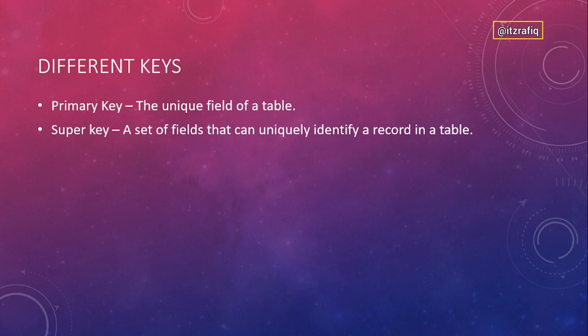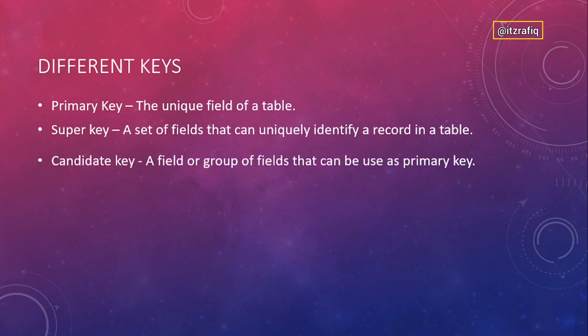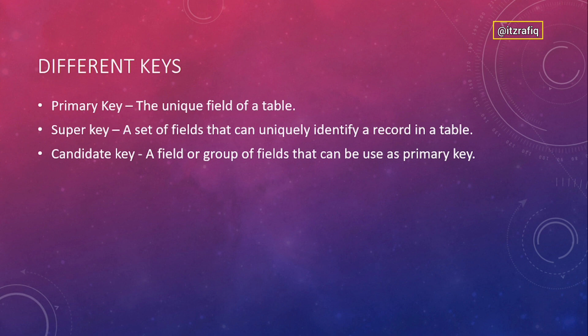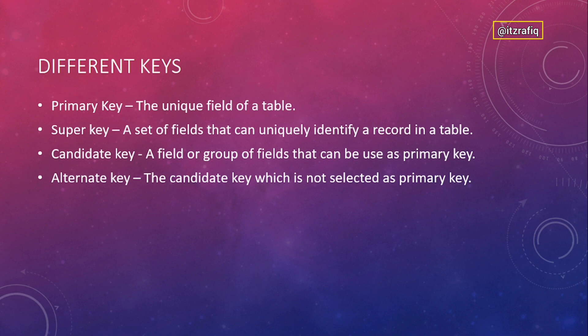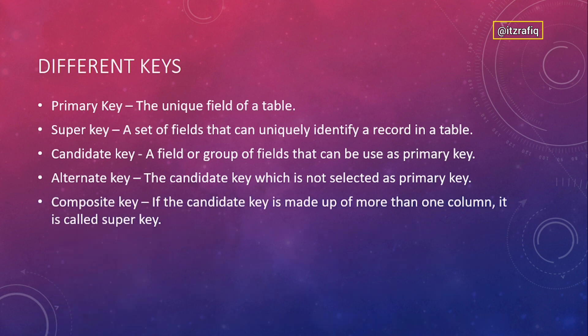A Candidate Key is a field or group of fields that can be used as a super key — for example, both admission number and phone number can serve as primary key, so they are called candidate keys. An Alternate Key is one that was not selected as the primary key. For instance, if admission number is selected as primary key, then the phone number becomes the alternate key. A Composite Key is when there is more than one candidate for the primary key.